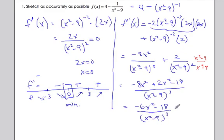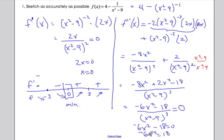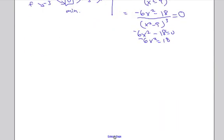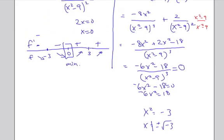For points of inflection, I set the numerator equal to zero: negative six x squared minus eighteen equals zero, so negative six x squared equals eighteen, which gives x squared equals negative three. Therefore x equals plus or minus the square root of negative three, which has no real solutions. Conclusion: there are no points of inflection.